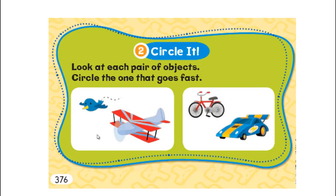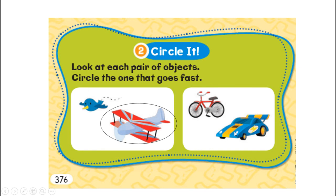For the last question, look at each pair of objects and circle the one that goes faster. Is the bird fast or the plane? The bird may be fast, but it's not faster than the plane — circle the plane. The bicycle or the race car? The race car is the fastest.